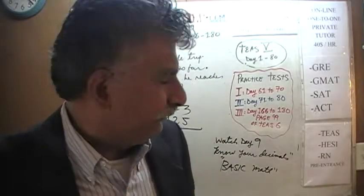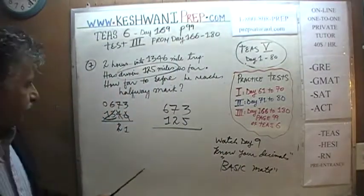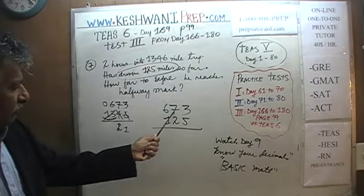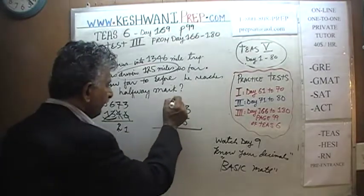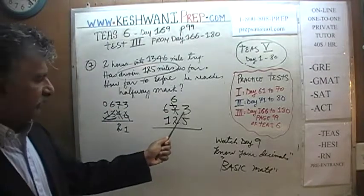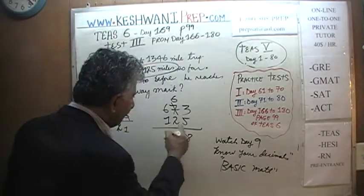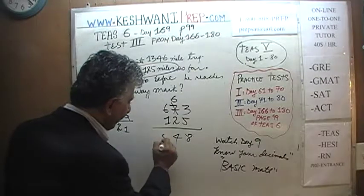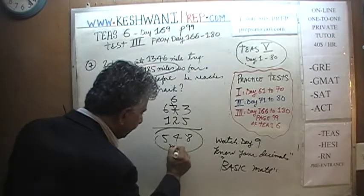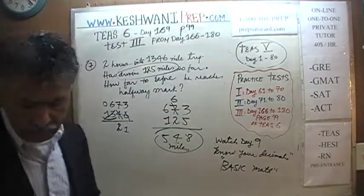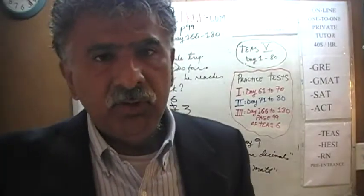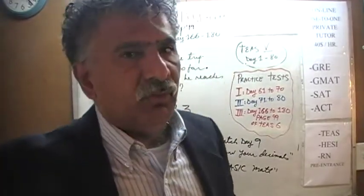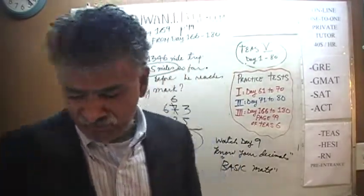It always pays to concentrate and pay attention. We cannot subtract 5 from 3, so we borrow 1 from the 7 — 7 becomes 6, 3 becomes 13. 13 minus 5 is 8, 6 minus 2 is 4, 6 minus 1 is 5. So he needs to travel another 548 miles before he reaches his halfway mark.